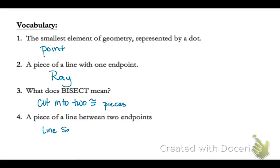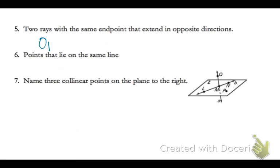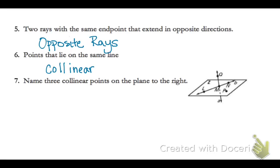And four is a line segment. Number five, we have opposite rays. Number six, points that lie on the same line are collinear. Name three collinear points on the plane to the right. You have to name L, M, and N.